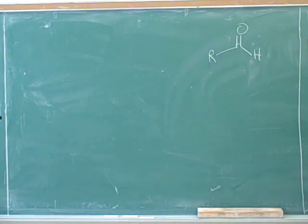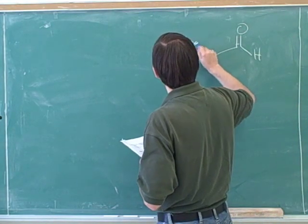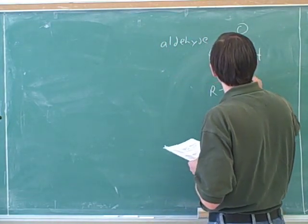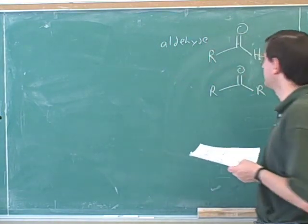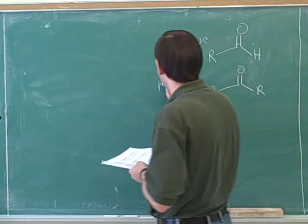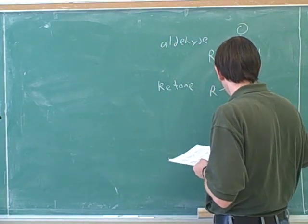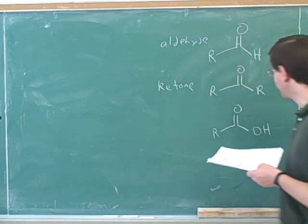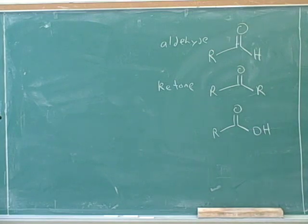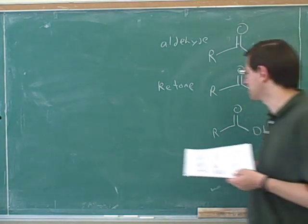Let's review. What's the general name for this type of functional group? It's an aldehyde. And how about this functional group? A ketone. A carboxylic acid. That's right. Well, this is what we've talked about in the past, and this is the main thing we'll focus on today — carboxylic acids.